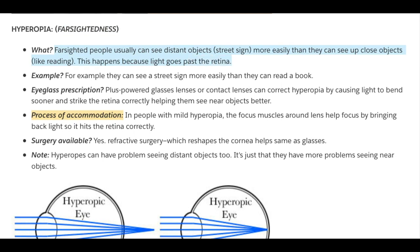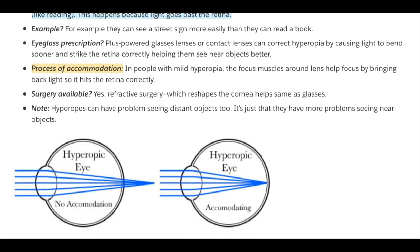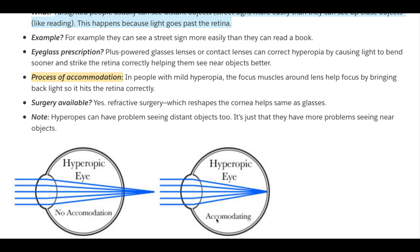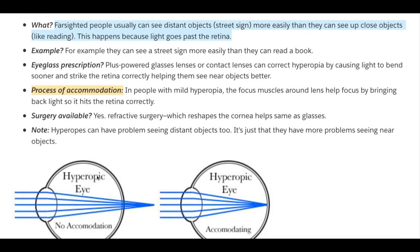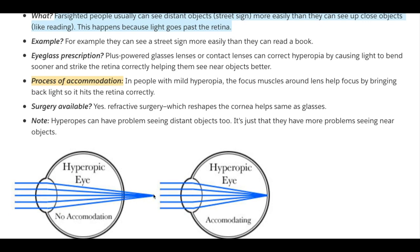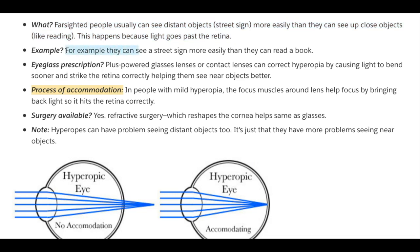Hyperopia, Farsightedness. Farsighted people usually see distant objects, like a street sign, more easily than they can see up-close objects, like reading. This happens because light goes past the retina. In a hyperopic eye, light focuses behind the retina rather than directly on it as in normal vision. The eyeglass prescription for such patients is plus-powered glasses or contact lenses, which correct hyperopia by causing light to bend sooner and strike the retina correctly, helping them see near objects better.